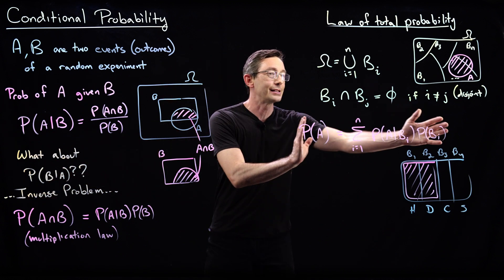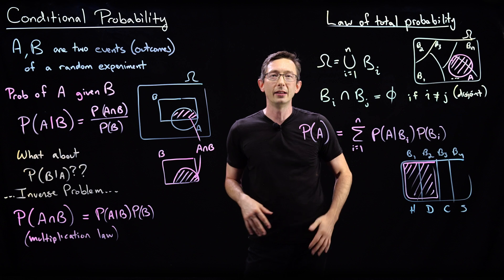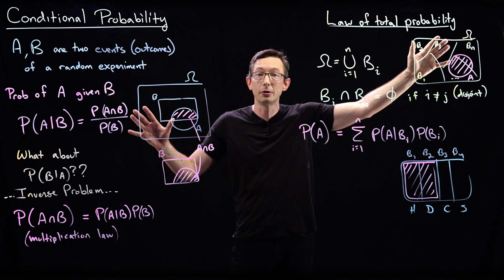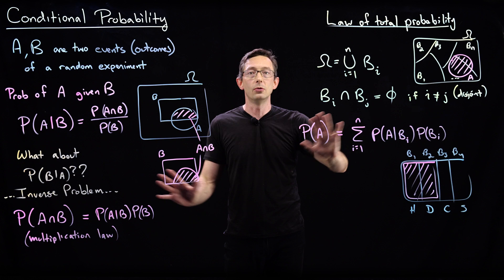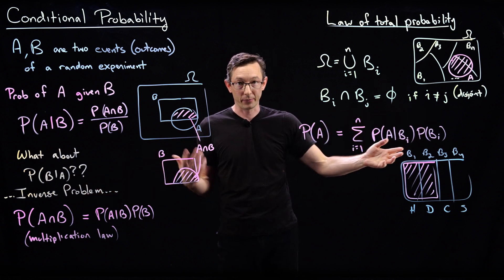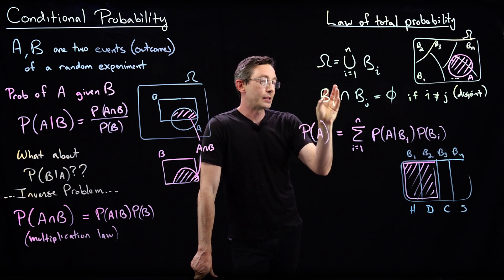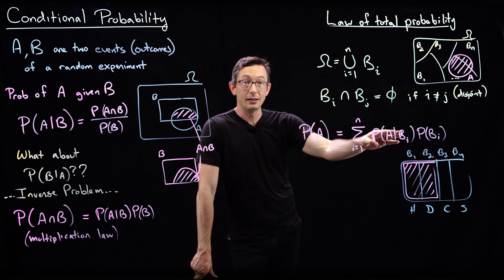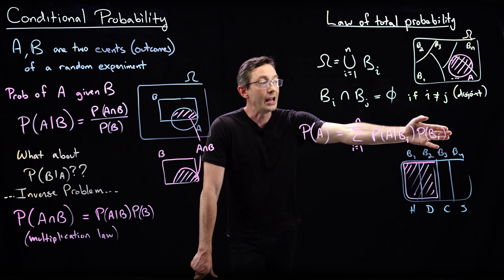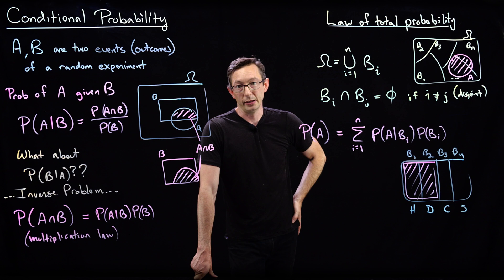We're going to use the multiplication law and the law of total probability a lot. They're common-sense things that just have to be true. The probability of A happening is the probability of A given event B times the probability of B, and you add up all those disjoint Bs to get the total probability. Think about this and really convince yourself it's true.